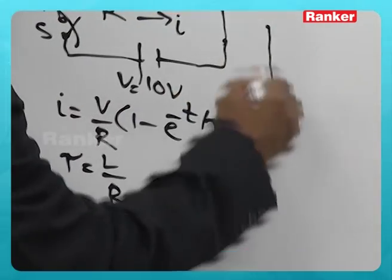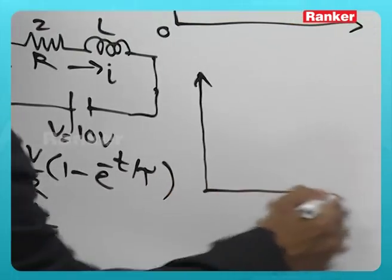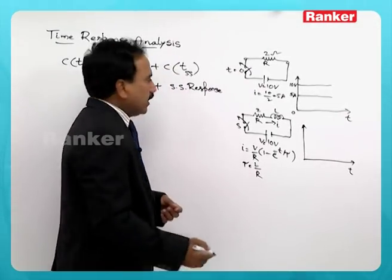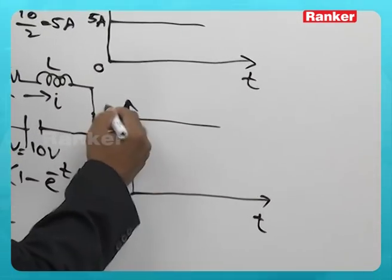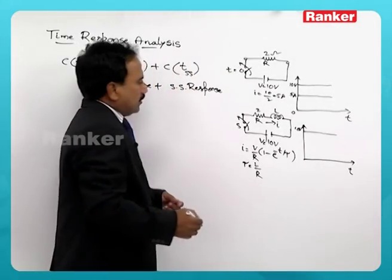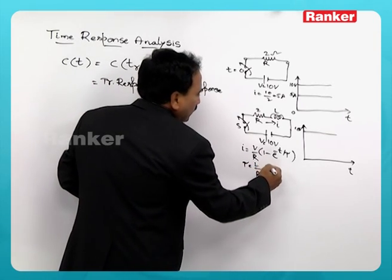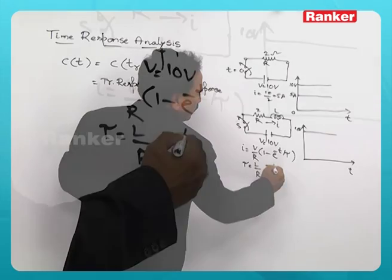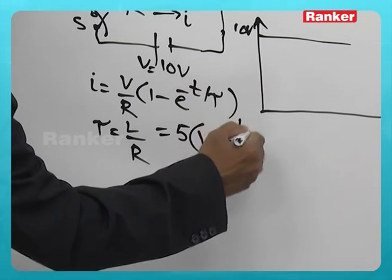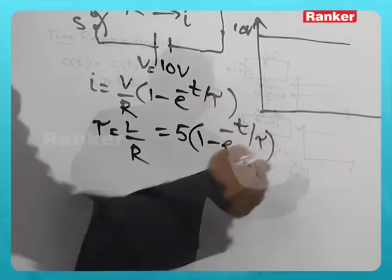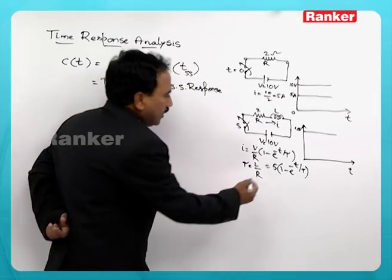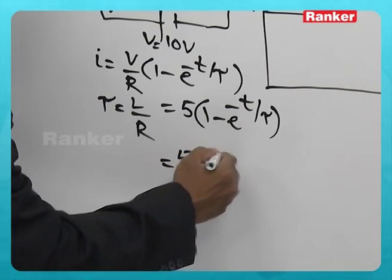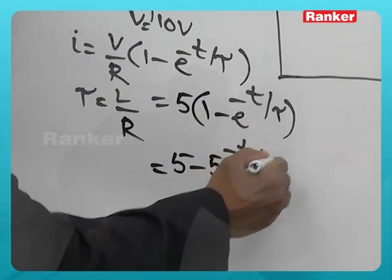If you see that, now response I of t as a function of time for 10 volts is the supply. Current here V by R, V is 10, resistance is 2, 5 amperes times 1 minus e power minus t by tau. That means I can write this as 5 minus 5 e power minus t by tau.